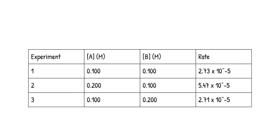Now here's an example. You would use experimental data in order to find the reaction order. First, you can look at experiments 1 and 3 in which the concentration of A remains the same. You can notice that the concentration of B doubles, but the rate also stays the same. This means that the reaction is zero-order with respect to B because even though the concentration of B doubles, the rate does not change.